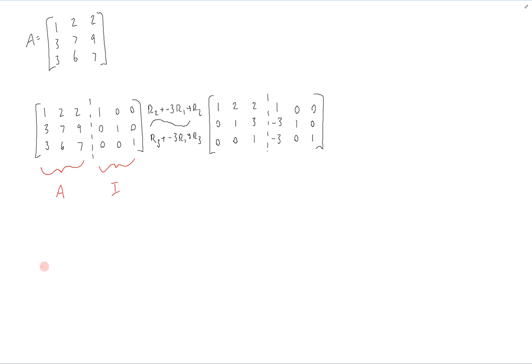The next step will be to take row two in order to get the full reduced form, and we're going to add negative three times row three to it to get rid of this and make it a zero.